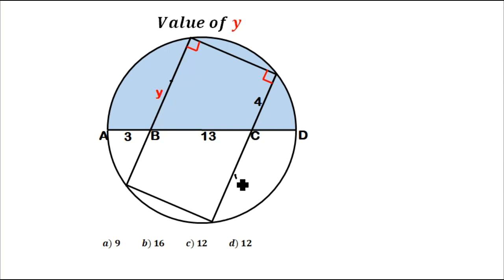From A to B, if it is 3, then automatically from C to D will also be 3. If from this point to C is 4, then from point B to this point on the circumference will also be 4.